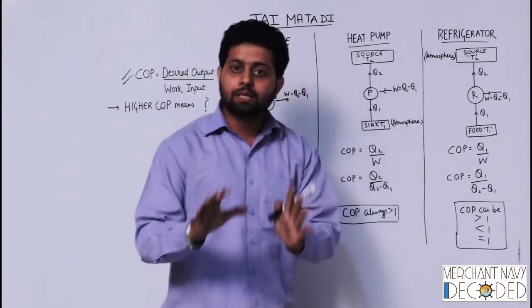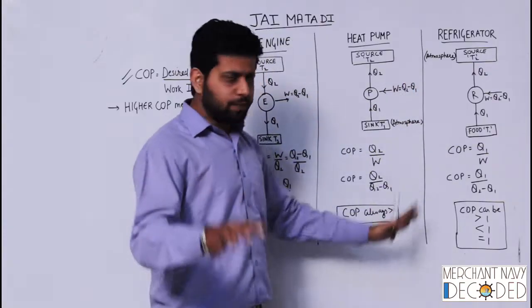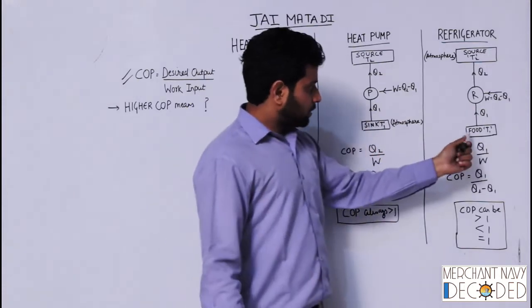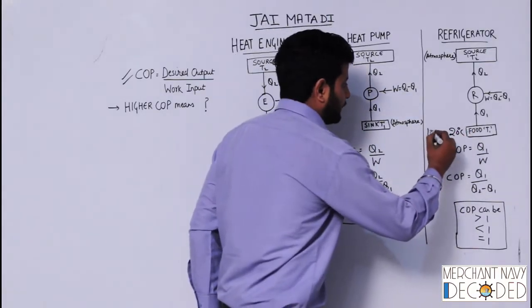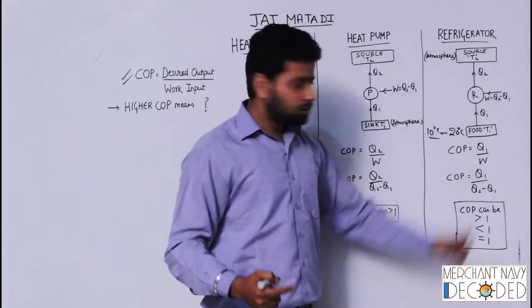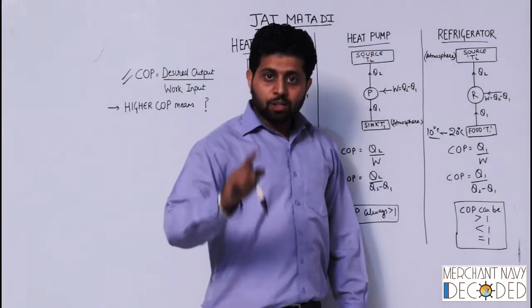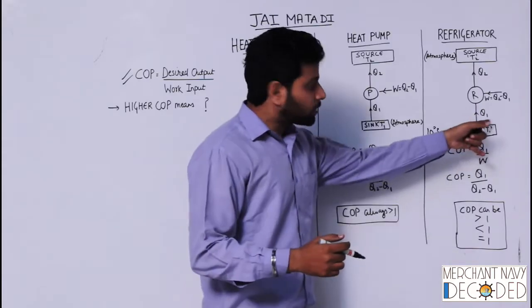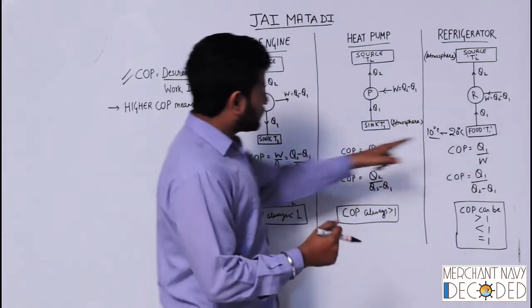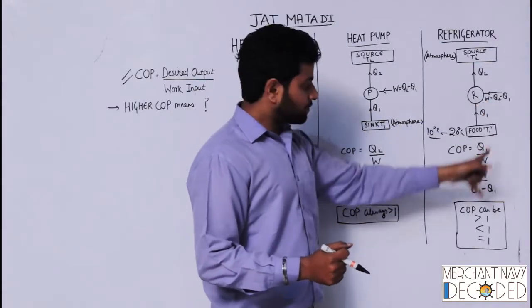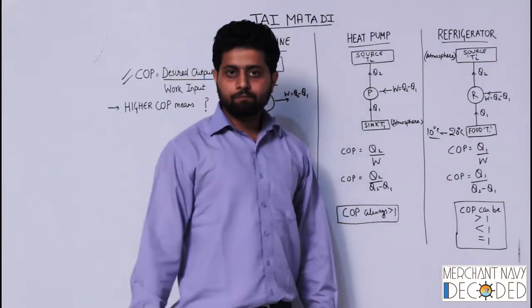Similarly, let's talk about refrigerator. In a refrigerator, we cool the food — we reduce the temperature. So heat pump and refrigerator look quite similar. The difference: here the food is at, say, 20 degrees centigrade. I am taking heat from it so that I can bring it to 10 degrees centigrade. This heat Q1 is taken by the refrigerator — the compressor is running, so work W is being done, and the excessive heat Q2 is given to the atmosphere. So the desired output is Q1 — the cooling — and work input is W, which is Q2 minus Q1. Coefficient of performance is Q1 upon (Q2 minus Q1). This can be greater than 1, less than 1, or equal to 1.